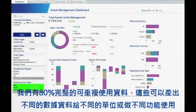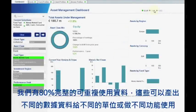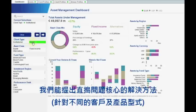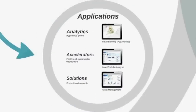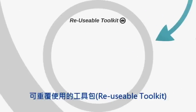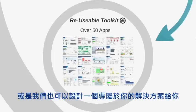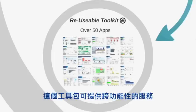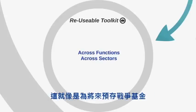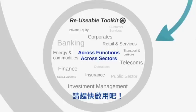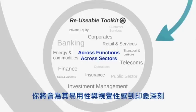Solutions. We have 80% complete reusable tools which can be rolled out to different clients across different functions and sectors. This solution captures key metrics, for example by client type and by product type. This is a reusable toolkit — you will have at your disposal over 50 existing apps, or we can build a completely bespoke solution for you. The toolkit spans functions and sectors and serves as a war chest for proposals, pitches, and prototypes. Use them to jumpstart your engagement — you will be impressed by the improved usability and visualization.